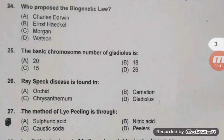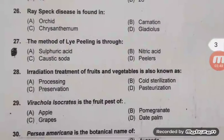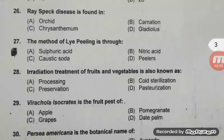Question 25: The basic chromosome number of Gladiolus is 15 — C is the right answer. Ray speck disease is found in Chrysanthemum — C. The method of lye peeling is through NaOH (caustic soda). Question 28: Irradiation treatment of fruit and vegetable is also known as cold sterilization — B is the right answer.